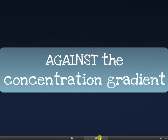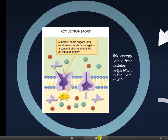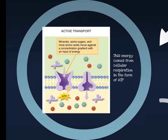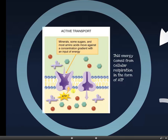Key point: against the concentration gradient. Minerals, some sugars, and most amino acids move against the concentration gradient with an input of energy, so ATP is required. Usually this involves proteins that are embedded within the membrane, and these proteins are similar in some way to enzymes in that they often have an active site or binding site. The use of ATP causes a conformational or shape change in the protein that pushes the substrate across — just like an enzyme.